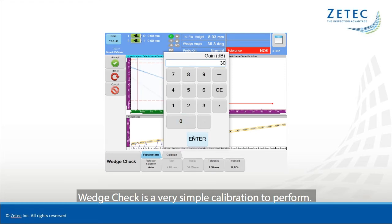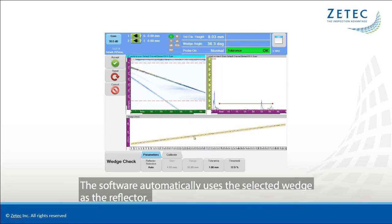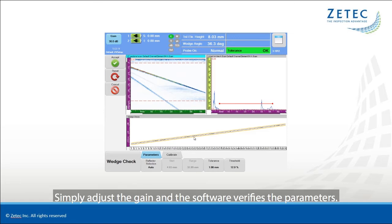Wedge Check is a very simple calibration to perform. The software automatically uses the selected wedge as the reflector. Simply adjust the gain and the software verifies the parameters.